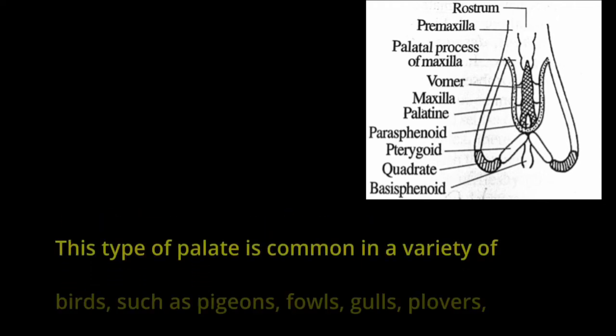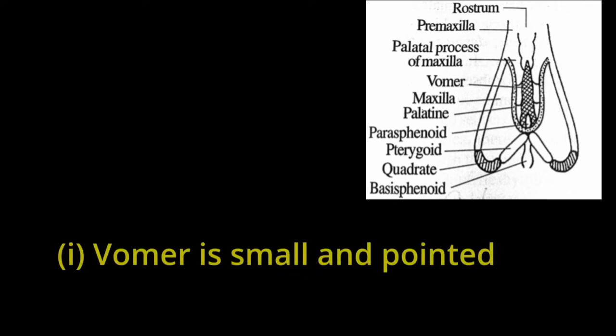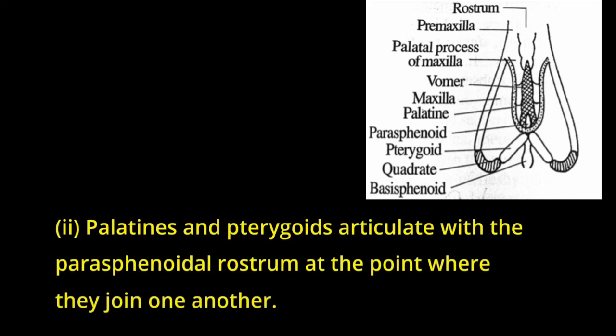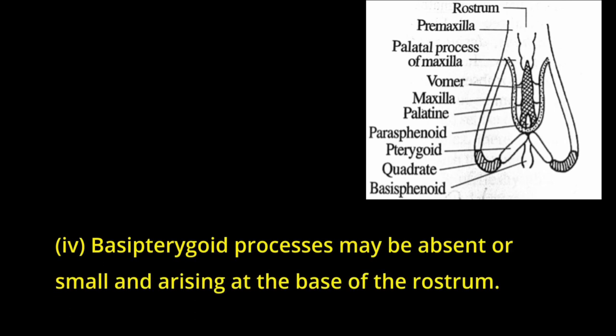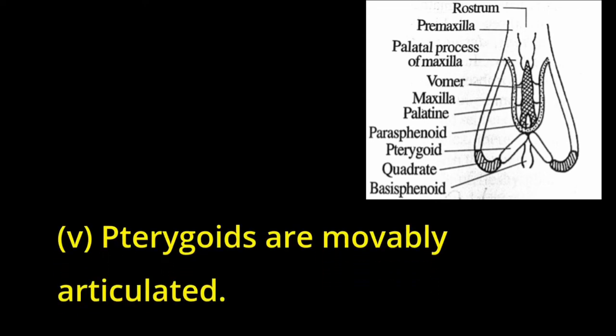2. Schizognathous Palate. This type of palate is common in a variety of birds, such as pigeons, fowls, gulls, plovers, cranes, woodpeckers, trogons, etc. (i) Vomer is small and pointed in front, or absent. (ii) Palatines and pterygoids articulate with the parisphenoidal rostrum at the point where they join one another. (iii) Maxillopalatine processes do not unite with one another or with the vomer. (iv) Basipterygoid processes may be absent or small and arising at the base of the rostrum. (v) Pterygoids are movably articulated.